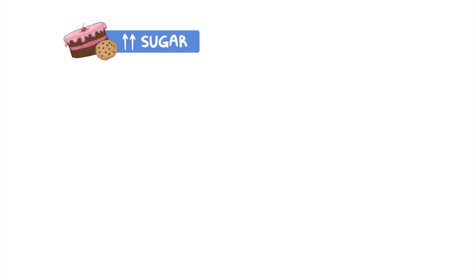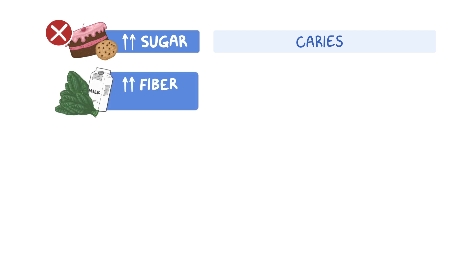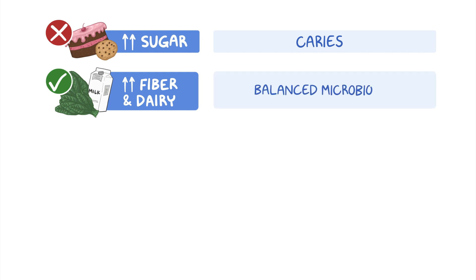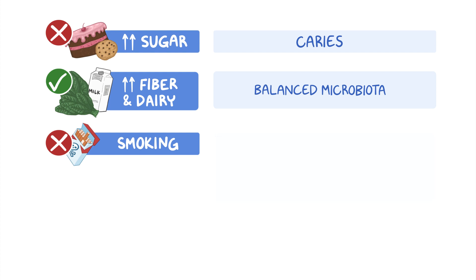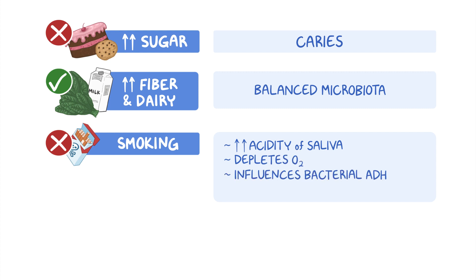A sugar-rich diet and frequent snacks can lead to dental caries, while a diet with increased fibrous foods and dairy products helps maintain a healthy balance in the oral microbiota. Smoking can alter the oral microbiota by increasing the acidity of saliva, depleting oxygen, influencing oral bacterial adherence to mucosal surfaces, and impairing host immunity.